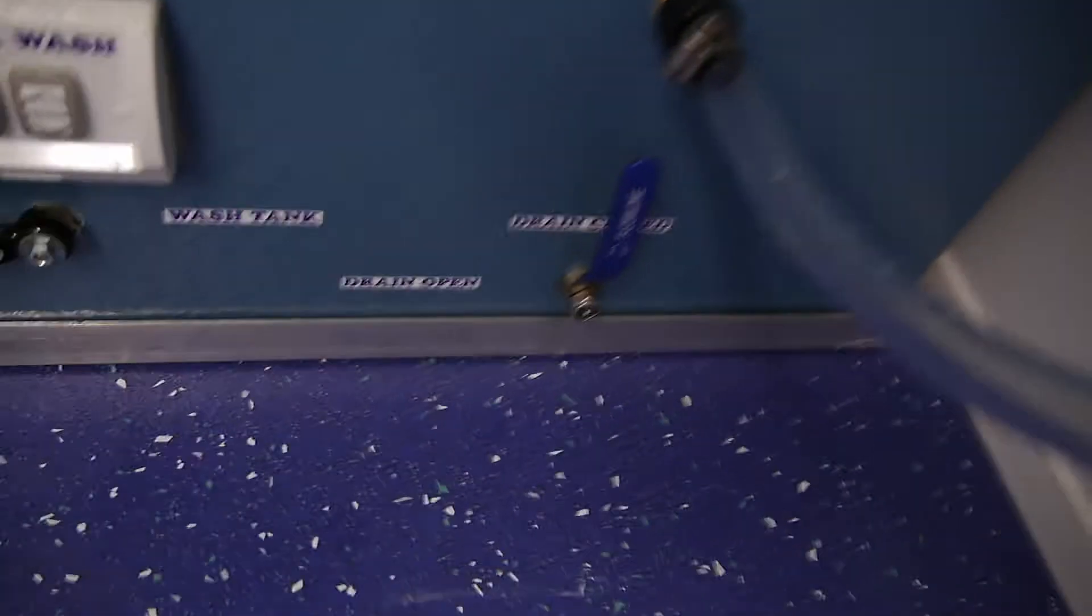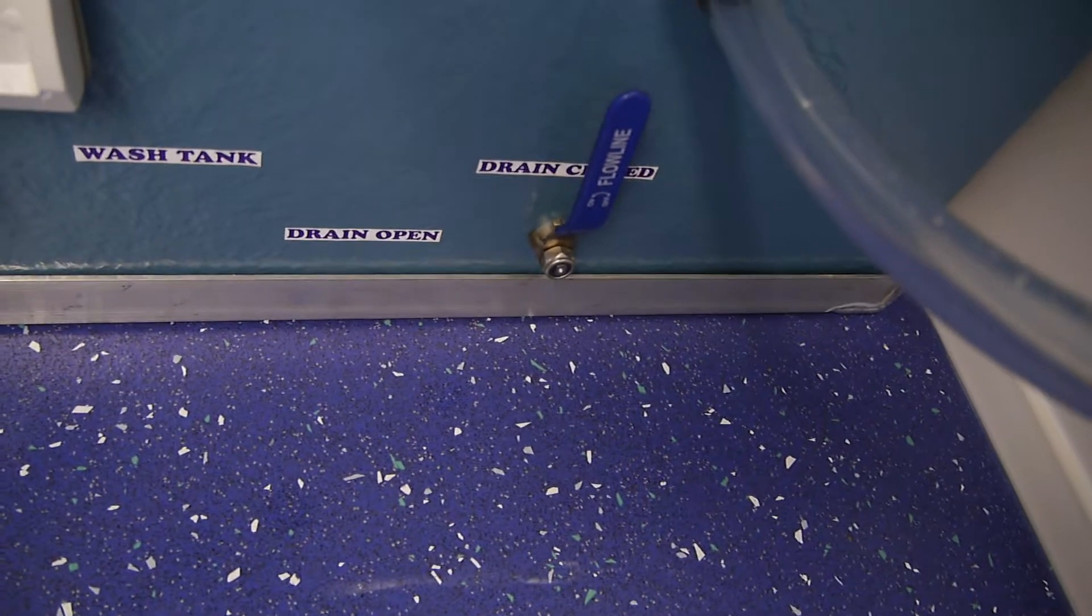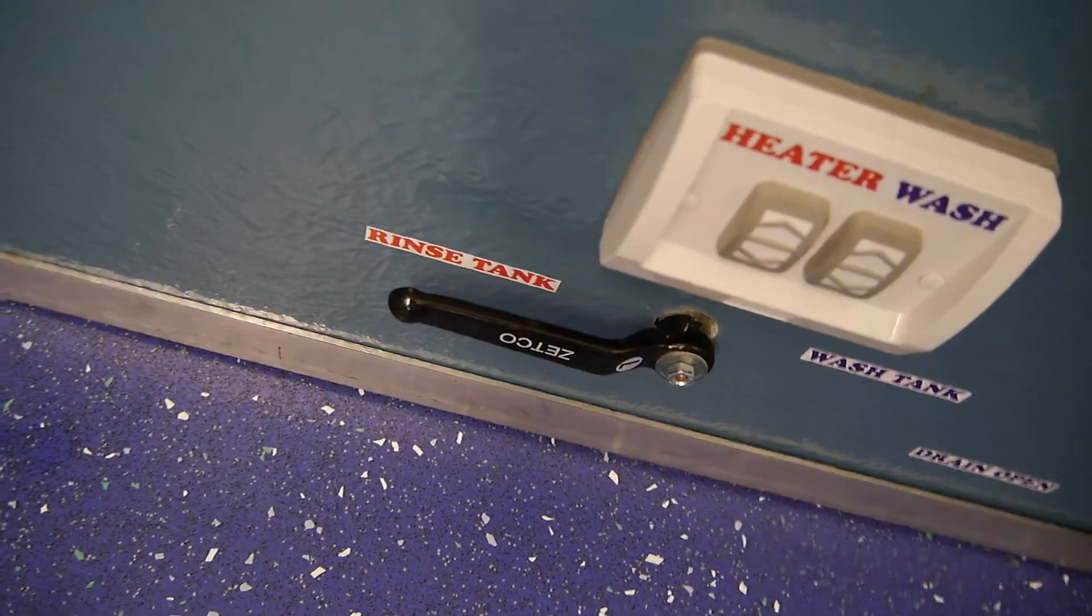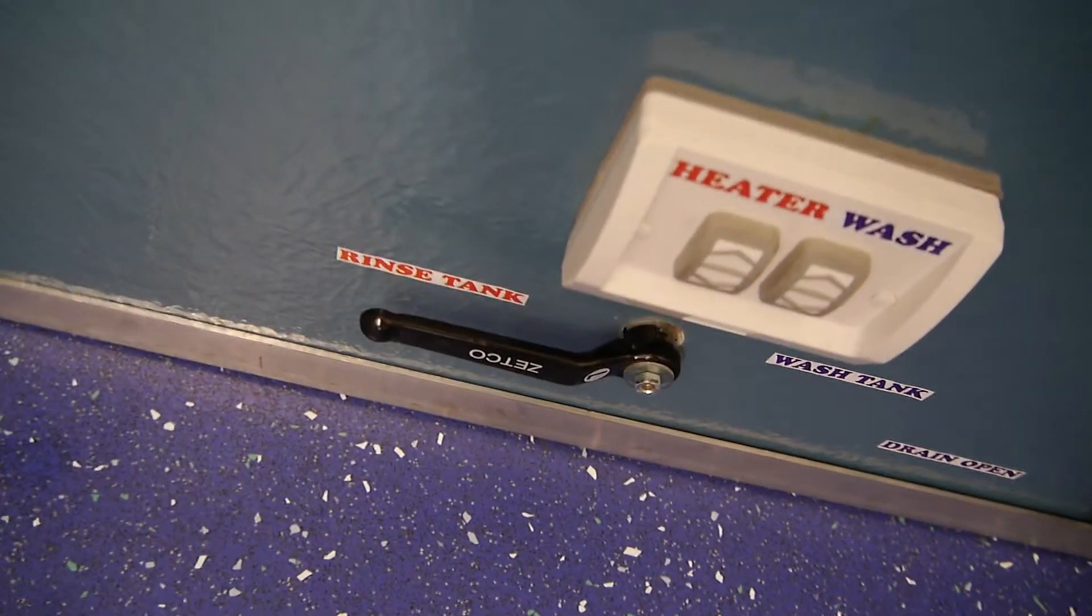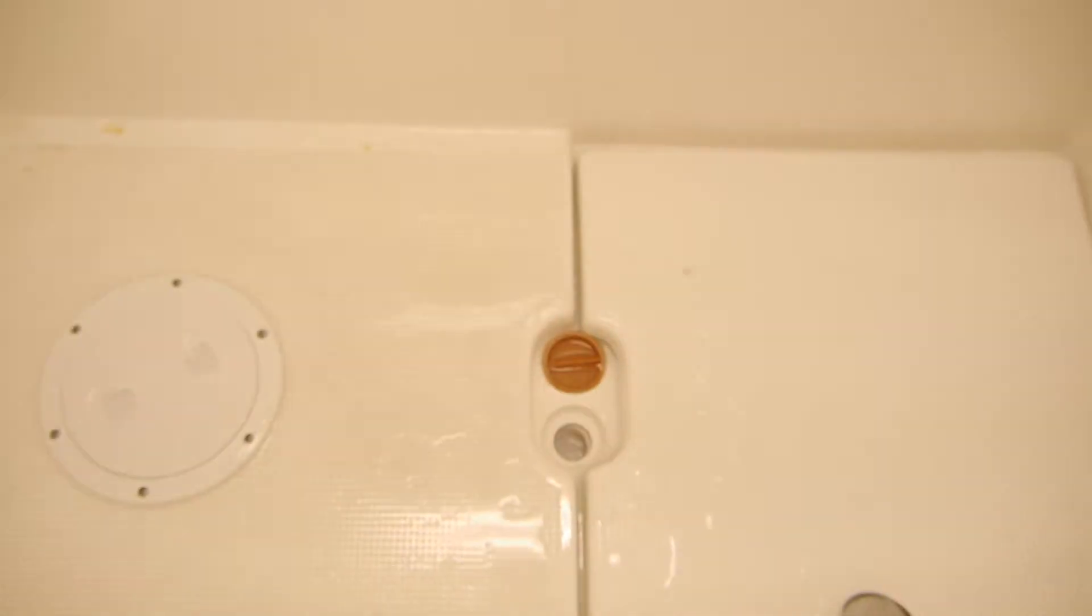So once you've washed the dog there, you've got a drain here on the front, you just turn it to drain and it drains that water out. And then you turn it back to the rinse tank which is the tank on the left hand side with the ball cock, so it's all heated water, and then you just continue then to rinse the dog.